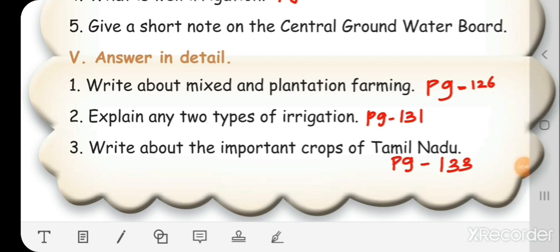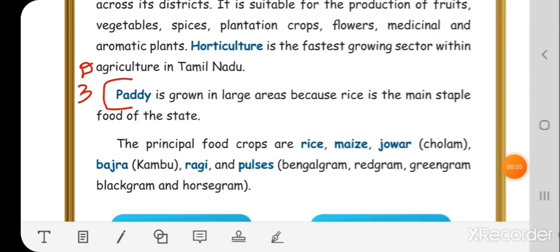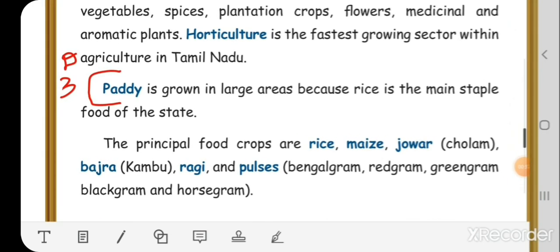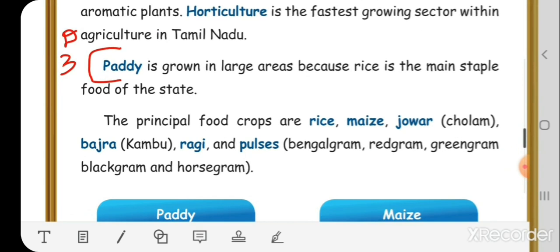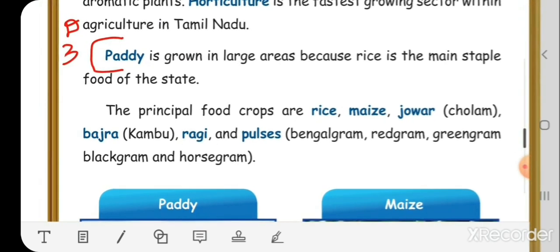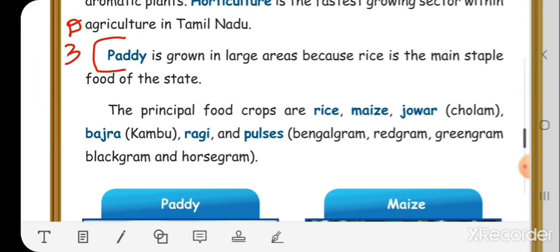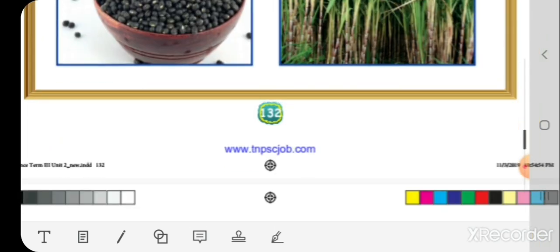Third detail: Write about the important crops of Tamil Nadu. This answer is on page number 133. Paddy is grown in large areas because rice is the main staple food of the state. The principal food crops are rice, maize, jowar, bajra, ragi, and pulses.